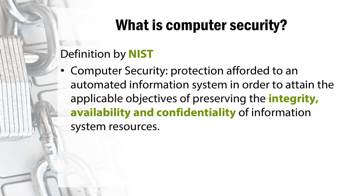Confidentiality refers to preventing the disclosure of information to unauthorized individuals and systems. For example, a credit card transaction on the internet requires a credit card number to be transmitted from the buyer to the server and from the server to a transaction processing network. While doing this, the system attempts to enforce confidentiality by encrypting the card number using transmission protocols. It also will attempt to limit the places where the transmission ends up. Integrity means that the data is consistent over its whole life cycle — it means that the data cannot be modified in an unauthorized or undetected manner.